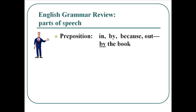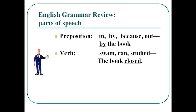Prepositions are usually little small relating words that relate things like in, by, because, or out — so by the book, or in the book, or on the book are all prepositions that relate the book to something else. Verbs are going to be a big focus for us in Greek. In English we have words like swam, ran, studied, jumped. So the book closed — closed is the verb. Verbs will come in various tenses and various persons: I closed, you closed, he/she/it closed. Various moods, also tenses — past tense, present tense, future tense — and voice, things like active voice versus passive voice. We'll be looking at those in the next chapter.